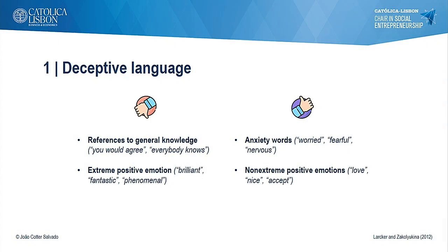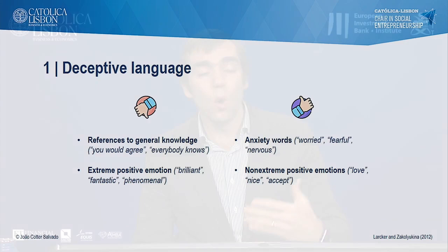The liars would use more references to general knowledge — expressions like 'you would agree that' or 'everybody knows that' — and they also used more extreme positive emotion language, such as 'this is a brilliant company' or 'fantastic results.' Those who did not lie used more words associated with anxiety, such as 'I'm worried about the future of this company' or 'I'm fearful about the environment,' and also non-extreme positive emotions like 'love,' 'nice,' or 'accept.' The recommendation here is: to be perceived as a non-liar, use more anxiety words and non-extreme positive emotion words, and reduce references to general knowledge and extreme positive emotion words.